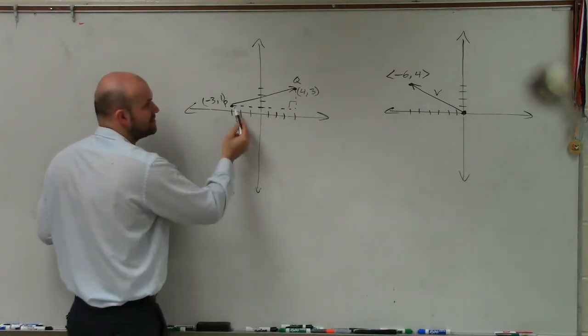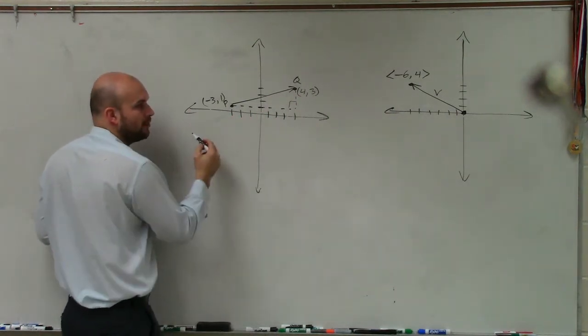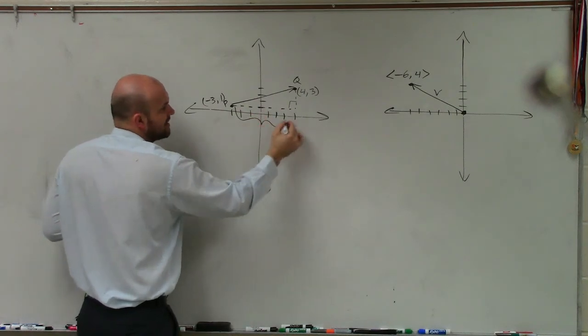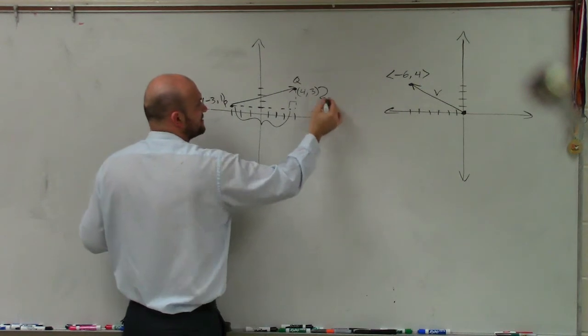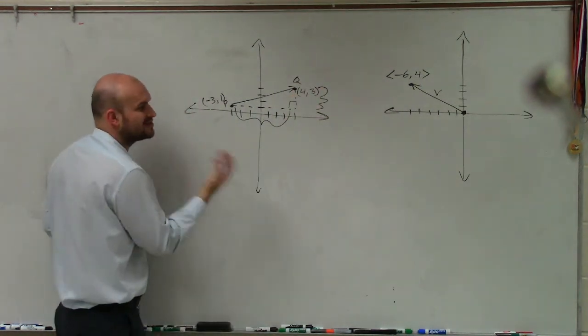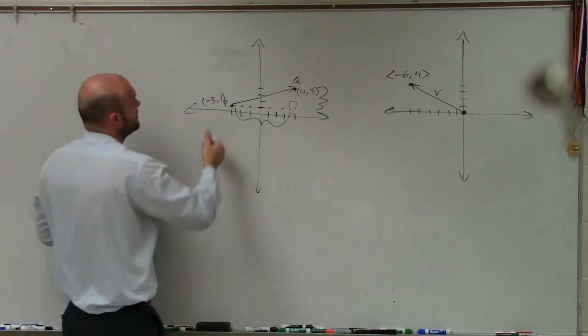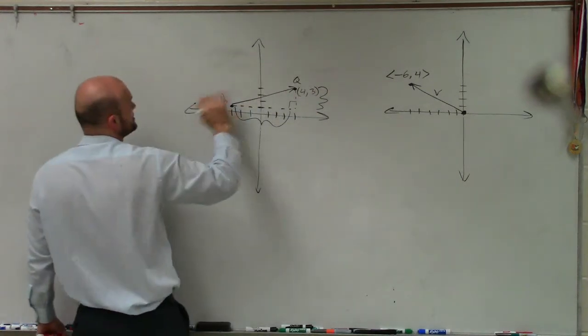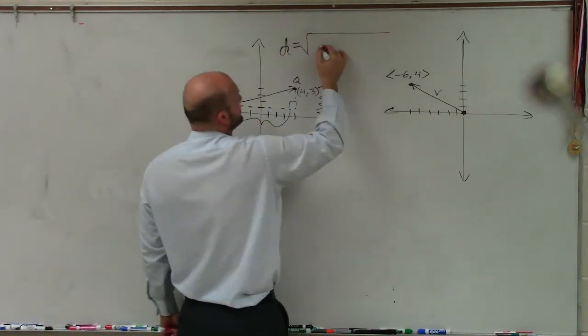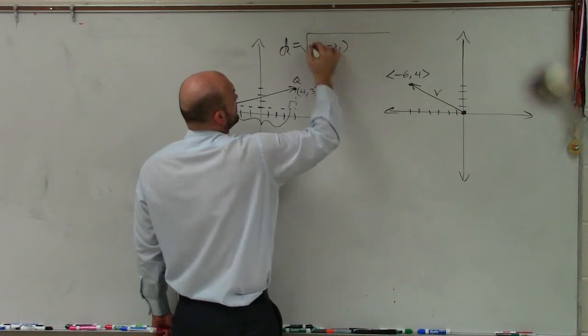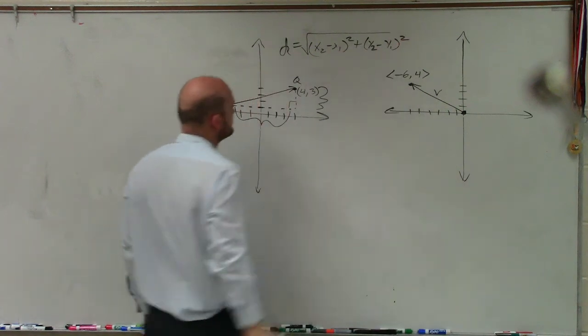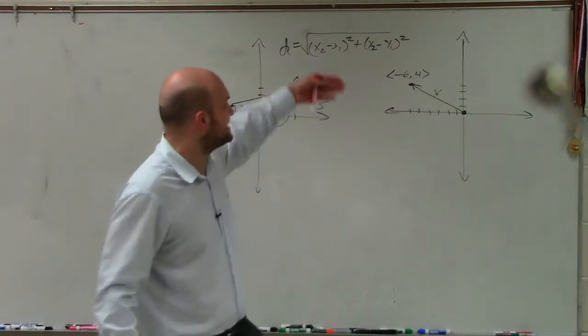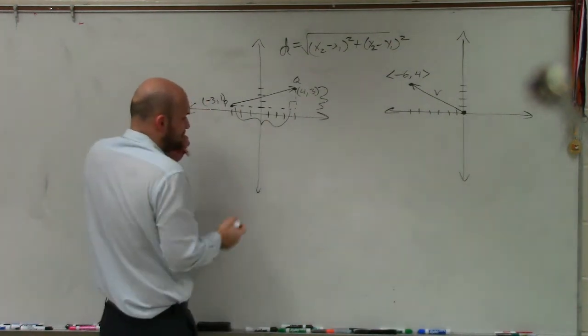So the first thing we want to do is find the difference between our coordinate points, which is going to give us the length of this triangle. And then we need to find the difference of our y-coordinates, which is going to give us the length of that side of the triangle. And if you remember the traditional distance formula between two points, distance equals the square root of x2 minus x1 squared plus y2 minus y1 squared. But we're going to use a little bit different notation. That's pretty much exactly what we're doing.